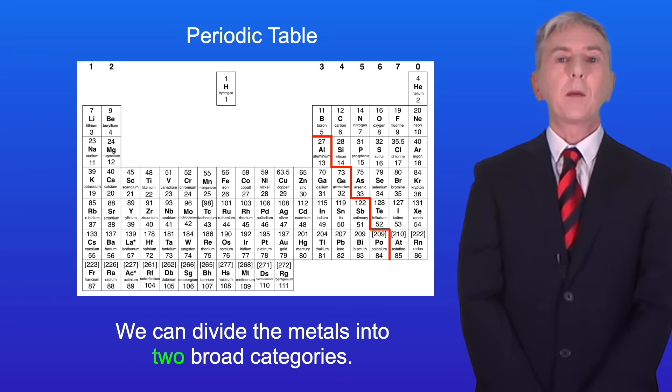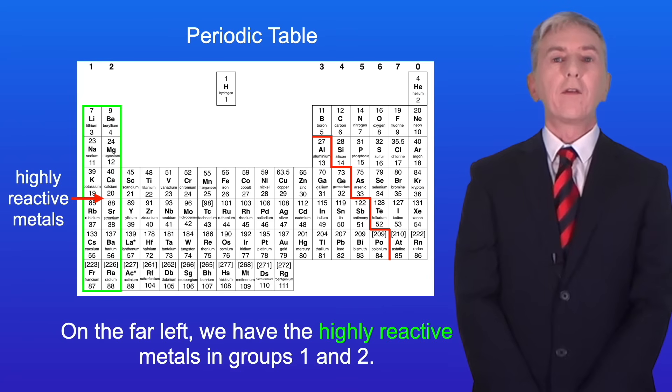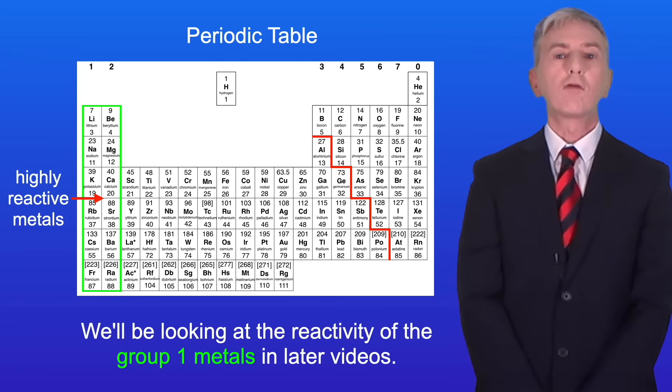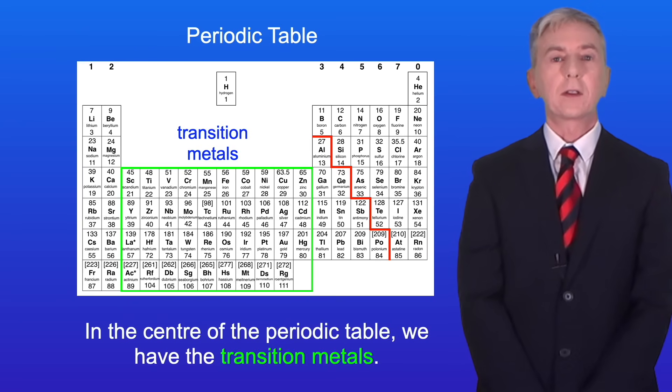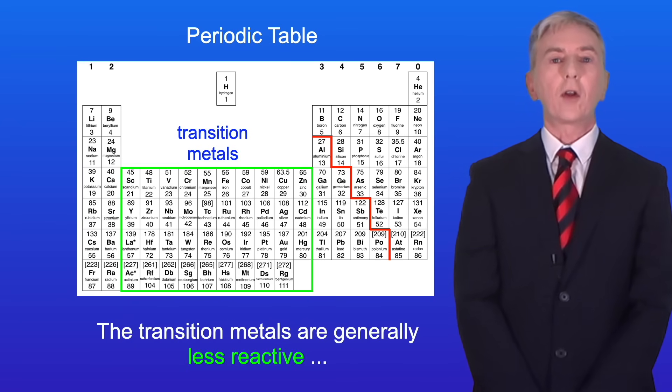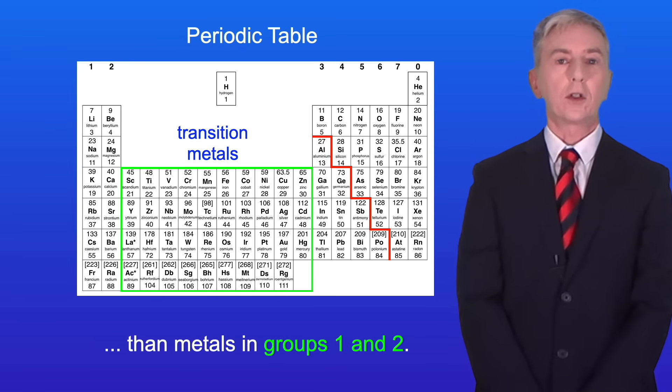We can divide the metals into two broad categories. On the far left we have the highly reactive metals in groups 1 and 2 and we'll be looking at the reactivity of the group 1 metals in later videos. In the center of the periodic table we have the transition metals. The transition metals are generally less reactive than metals in groups 1 and 2.